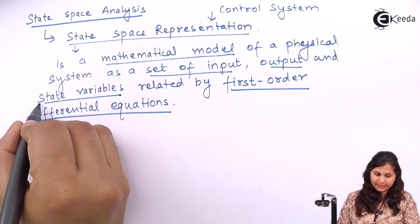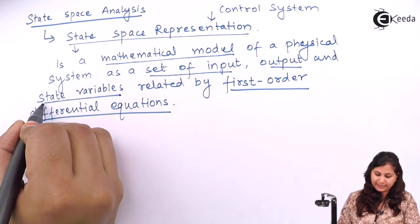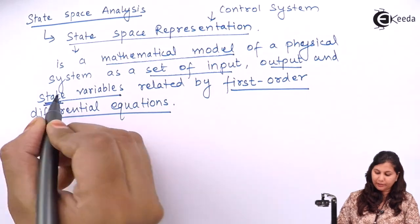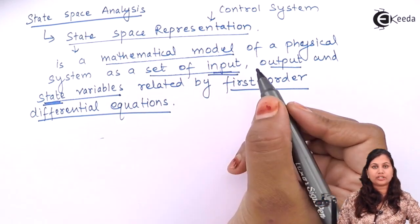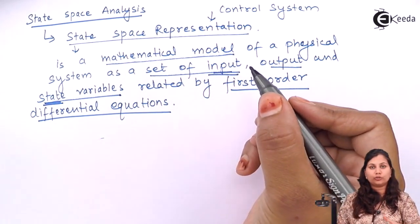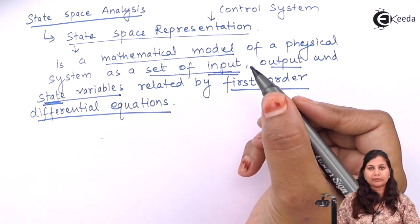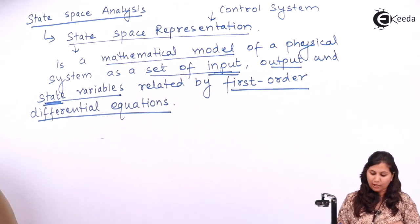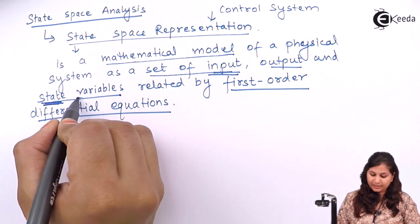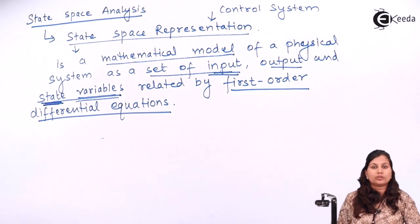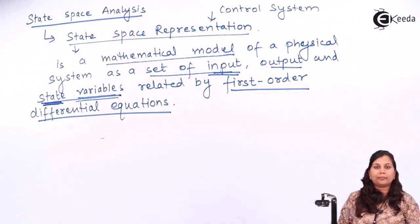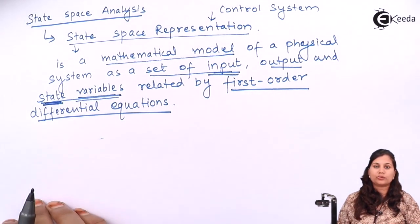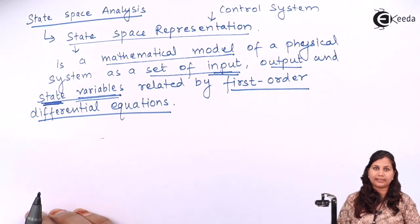Here we have the word state variables and state. Input is the signal which is given to the system, the incoming signal; output is the outgoing signal. So what are the terms state and state variables? Let us study the basic terminology used in the state space technique.